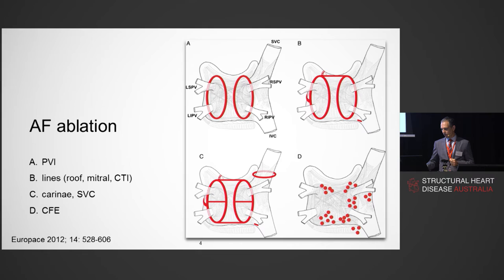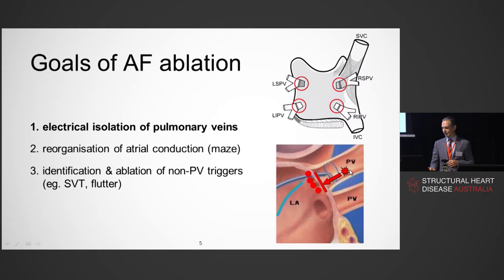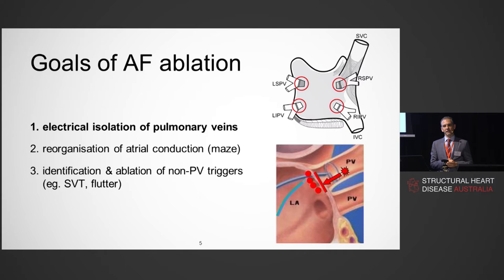The key goal I've put in bold is electrical isolation of the veins and ablation around the pulmonary veins — critical to any AF ablation procedure. This well-known cartoon illustrates pulmonary vein activity being conducted into the left atrium and triggering AF. By ablating at those red circles, we block that activity, electrically disconnecting the pulmonary veins from the heart, achieving both exit block and entrance block.